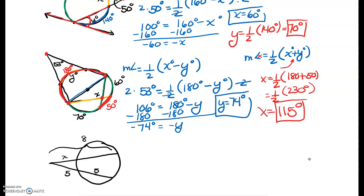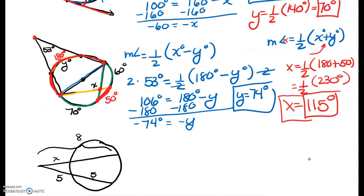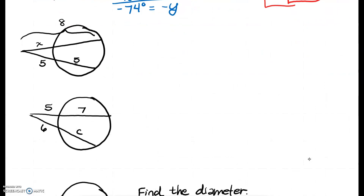We found our x value and our y value. So now let's do the next problem. The next problem almost reminds me of a Pac-Man. In this one, we're finding segment lengths and not angles, so we're going to use our segment formulas. We have an intersection point outside of the circle, so we are going to take the outside part times the whole part equals the outside part times the whole part.